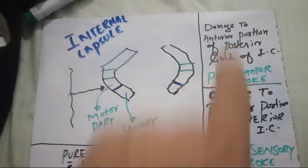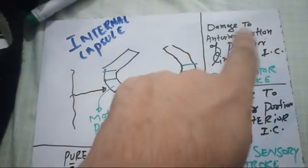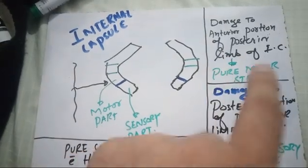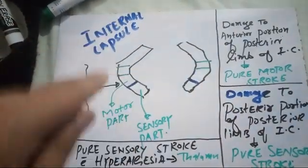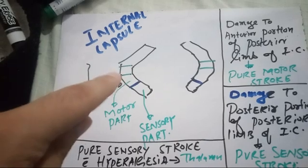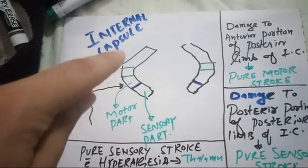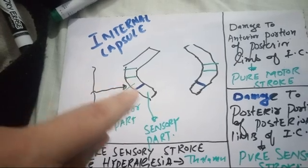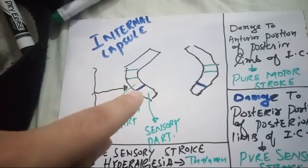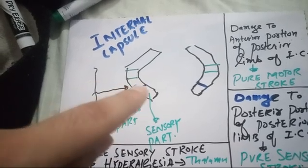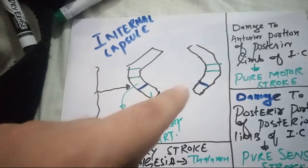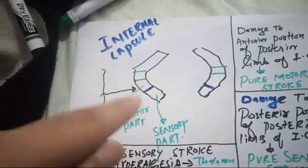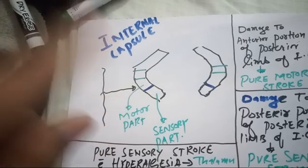There is an MCQ: damage to the anterior portion of posterior limb of internal capsule will cause pure motor stroke. Looking at the cross-section of the internal capsule, the posterior limb has two portions - the anterior portion of posterior limb and the posterior portion of posterior limb. The anterior portion of posterior limb is the motor part.